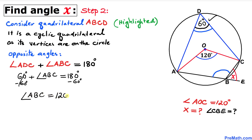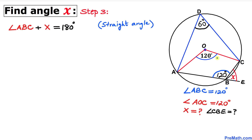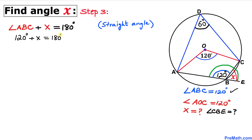Angle ABC turns out to be 120 degrees. Now let's focus on the straight angle here, which is 180 degrees. That straight angle is the same as angle ABC plus angle x, so these two angles add up to 180 degrees. We replace angle ABC with 120 degrees, giving us 120 degrees plus x equals 180 degrees.